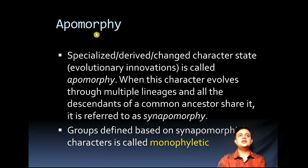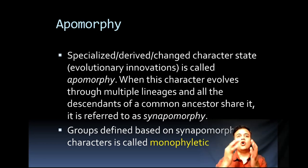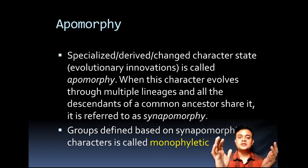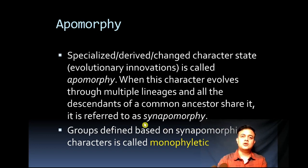Apomorphy is a specialized, derived, or changed character state — an evolutionary innovation. When this character evolves and all descendants of a common ancestor share it, it is referred to as synapomorphic. 'Syn' means shared or together. So all groups having that character is known as a synapomorphic character state, and groups defined based on synapomorphic characters are known as monophyletic groups.